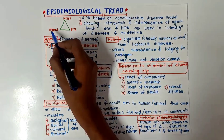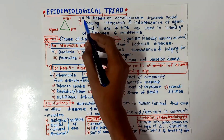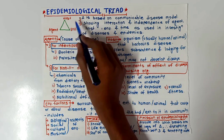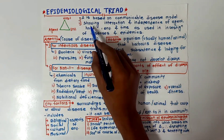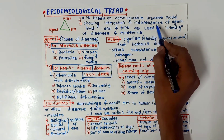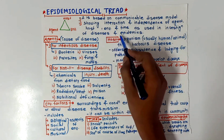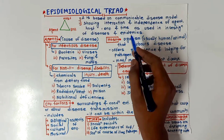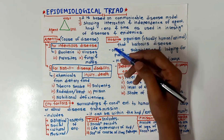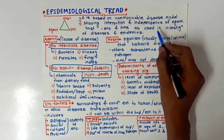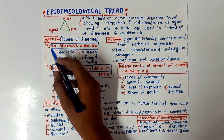The three factors are agent, host, and environment — it describes their relation. This triangle is based on the communicable disease model and it shows the interaction and interdependence of agent, host, environment, and time, as used in investigation of diseases and epidemics.